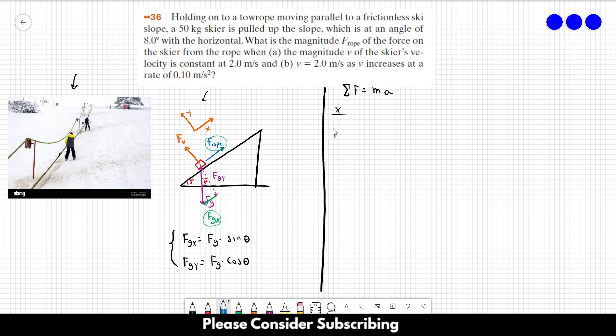F rope, which is positive because it points in the positive direction of the x axis, and we have minus fgX. This is equal to the mass times the acceleration in the x direction. That's the only equation that we are going to use because we know the acceleration and everything else. We just need to calculate f rope.